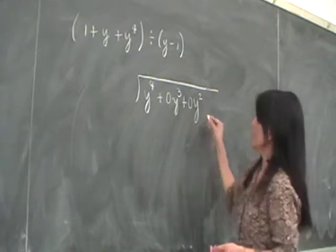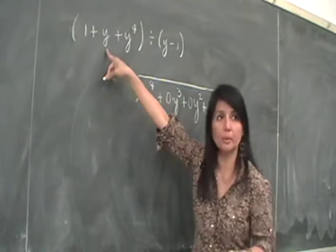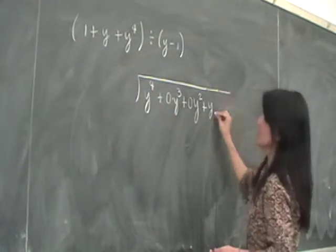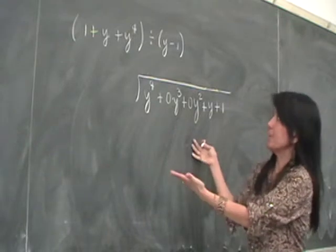And after y squared, you expect to see the y to the 1, and you put that y to the 1 now, right? Plus 1. And you'll see in a little bit why we need these placeholders. These are really just placeholders.